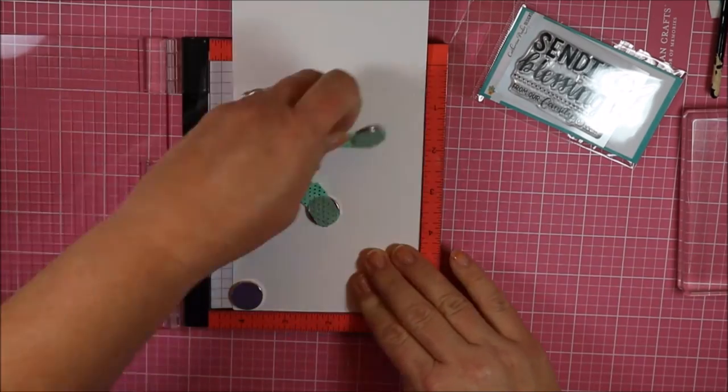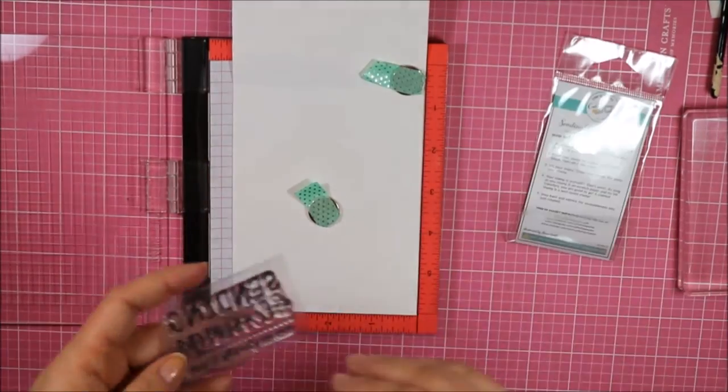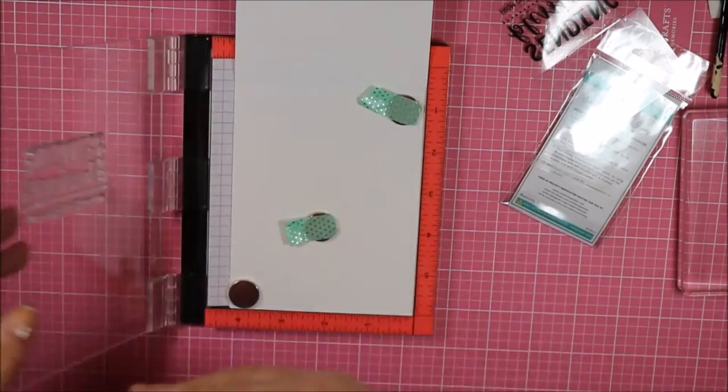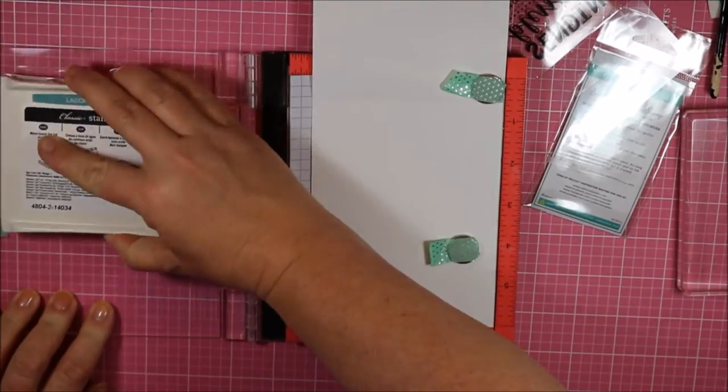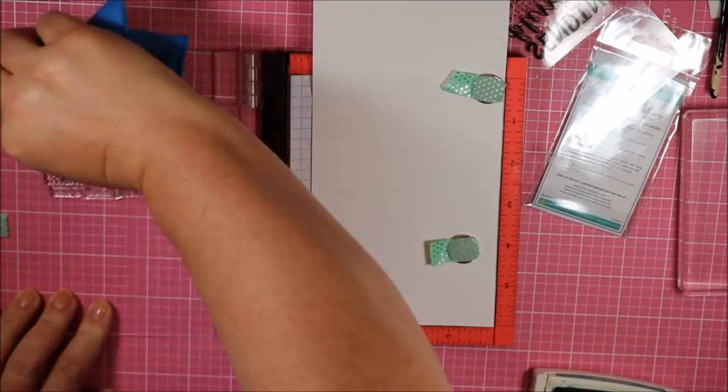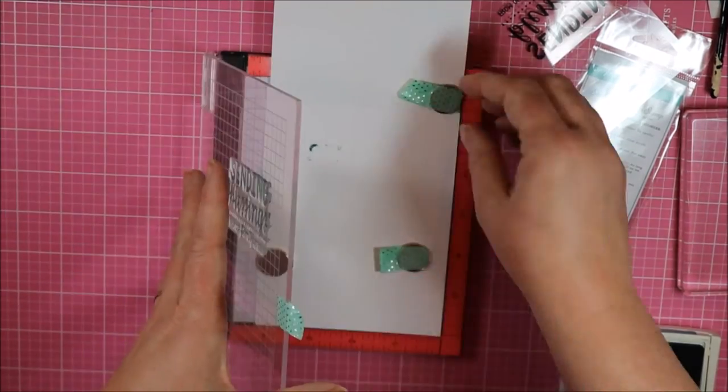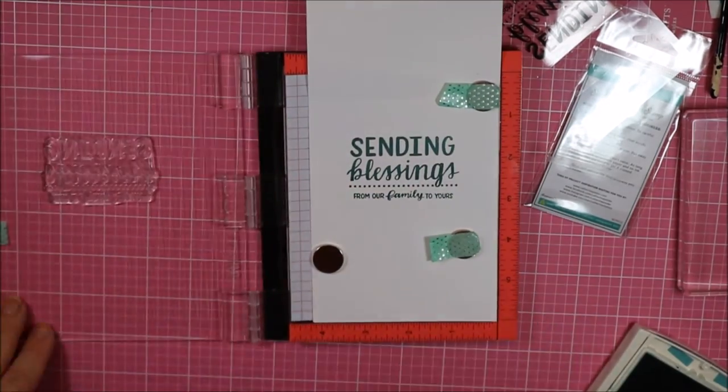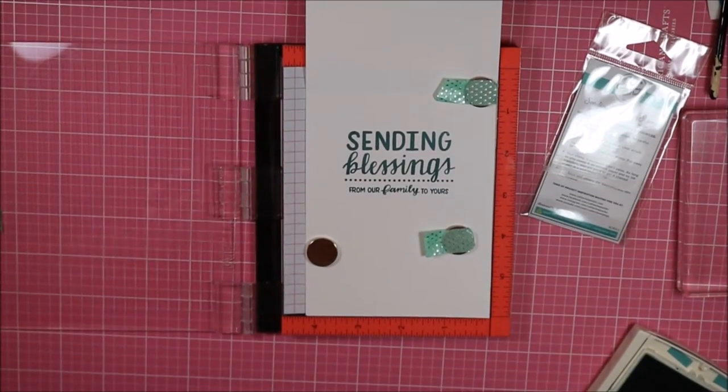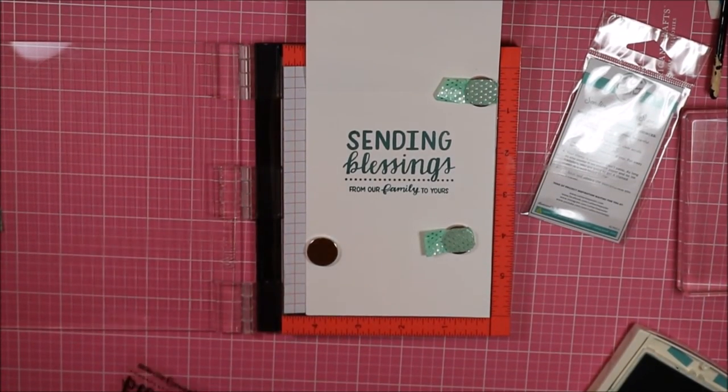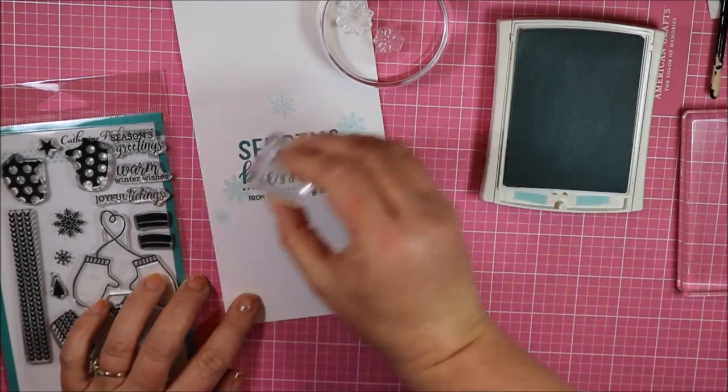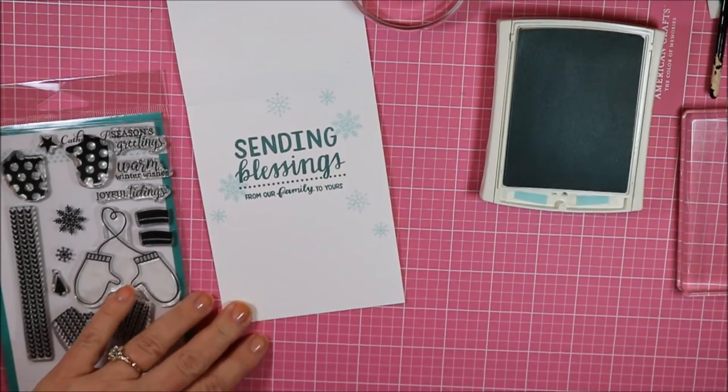For the inside of my card, I did a little bit of stamping. I usually don't show what I do on the inside of my cards. Mostly because I don't usually do this part until right before I send it. But this sentiment is something that I say all the time, especially in my thank you cards. But I'll say it even not in my thank you cards. And it says, sending blessings from our family to yours. So I'm inking it up in that same darker ink, the Lost Lagoon. And then I'm going to take the snowflakes from the Holiday Mitten stamp set. And I'm going to stamp them around the sentiment, kind of scattering them.